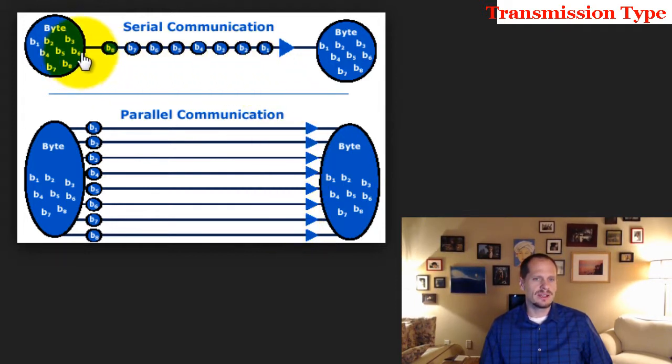And a serial connection just means all the zeros and ones - here we have a byte of data with the different bits of data. There's eight of them: one, two, three, four, five, six, seven, eight. So how do we send those? They just go one after another, single file line - serial communication.